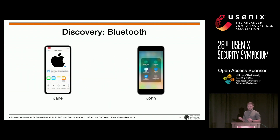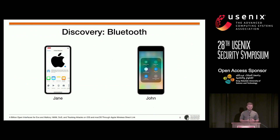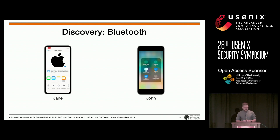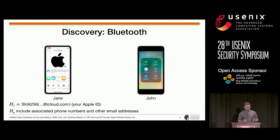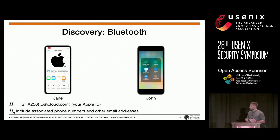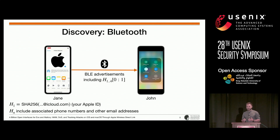AirDrop requires two devices within communication range of each other. The initiator, which I will call Jane throughout this talk, starts the AirDrop discovery mechanism to detect nearby AirDrop receivers simply by opening the sharing pane on her phone. She computes hashes of her own contact identifiers — in particular, her Apple ID and associated phone numbers and email addresses — then starts sending out BLE advertisements which include the first two bytes of those hashes.